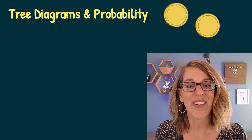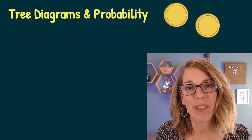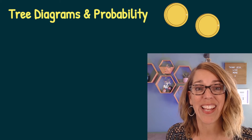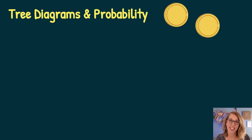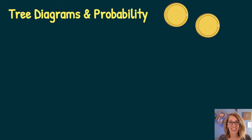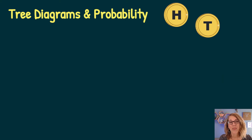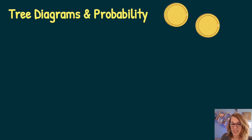Let's learn about tree diagrams, probability, and sample spaces. In this first example I've got two coins that can each land on either heads or tails. We're going to flip both of those coins, and that's going to give us two different levels to this tree diagram.